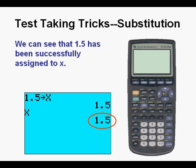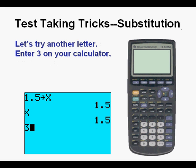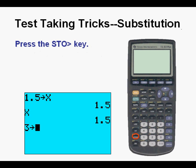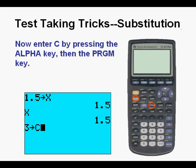Let's try another letter. Let's enter 3 on the calculator. Press the storage key. Now enter C by pressing the alpha key, then the program key PRGM with the green C above it. Press enter.